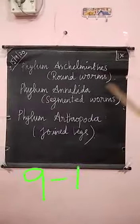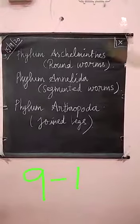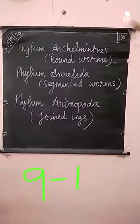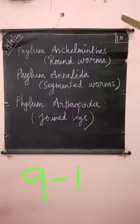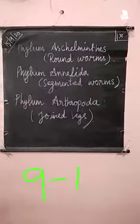The first one is roundworms. The binomial name of roundworms is Phylum Nematoda (Ascaris lumbricoides).